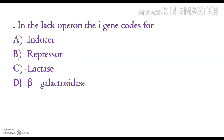In the lac operon, the i gene codes for: an inducer, repressor, lactase, or beta-galactosidase. The correct answer is option B, the repressor.